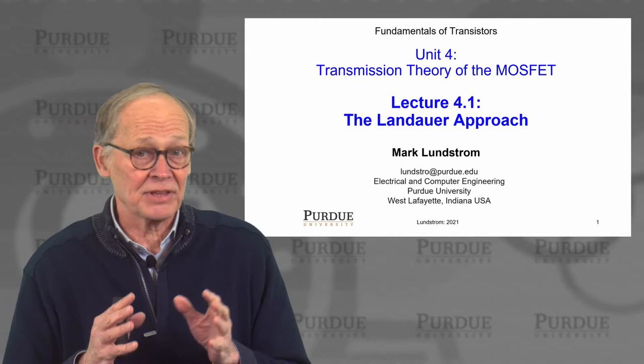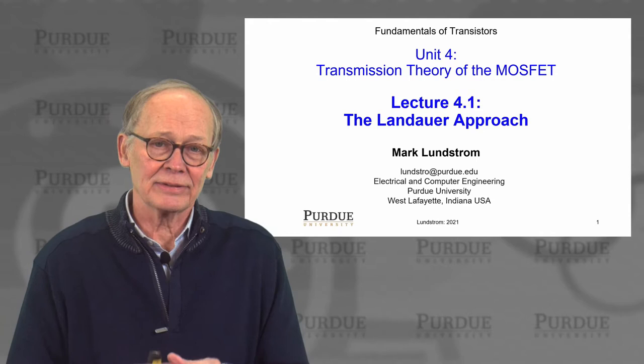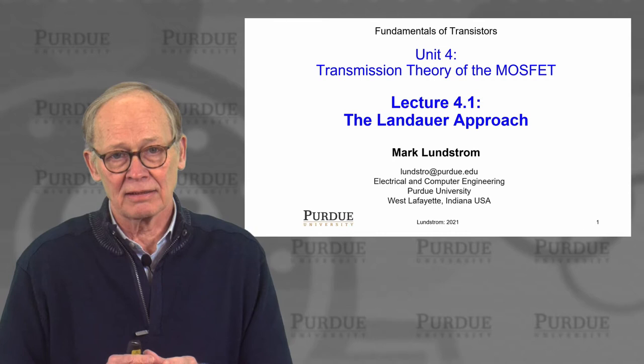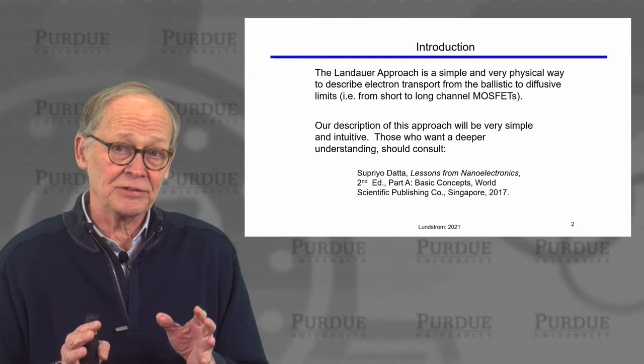We've come to the heart of the course. In this unit, we will be talking about a theory of the modern nanoscale MOSFET. In the last unit, we talked about charge, and current is charge that flows. In this unit, we'll talk about how that charge flows through a MOSFET under small drain-to-source bias and under large drain-to-source bias. We're going to use a particular approach to charge transport called the Landauer approach.